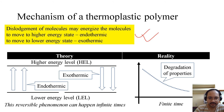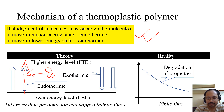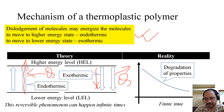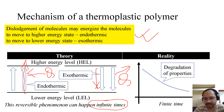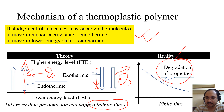Pictorially, the thermoplastic absorbs heat to go to a higher energy level (endothermic) and releases heat when returning to a lower energy level (exothermic). These transitions can theoretically happen an infinite number of times, but practically, after a certain number of cycles there is degradation — the properties gradually reduce and the material weakens.